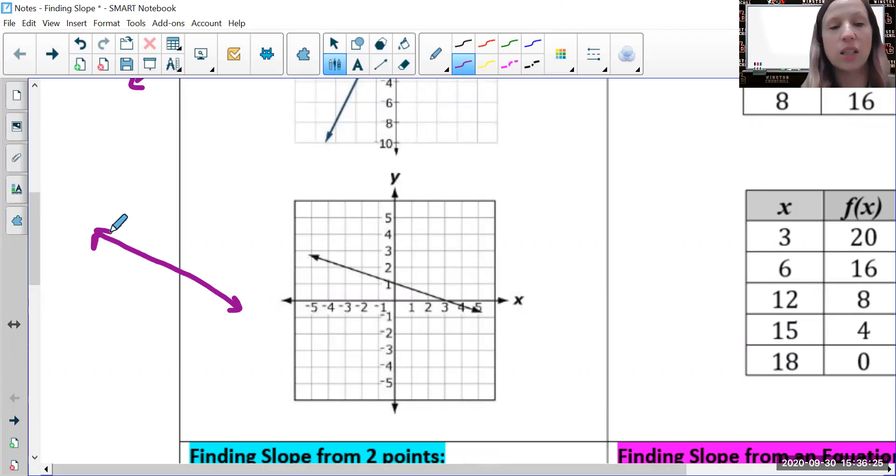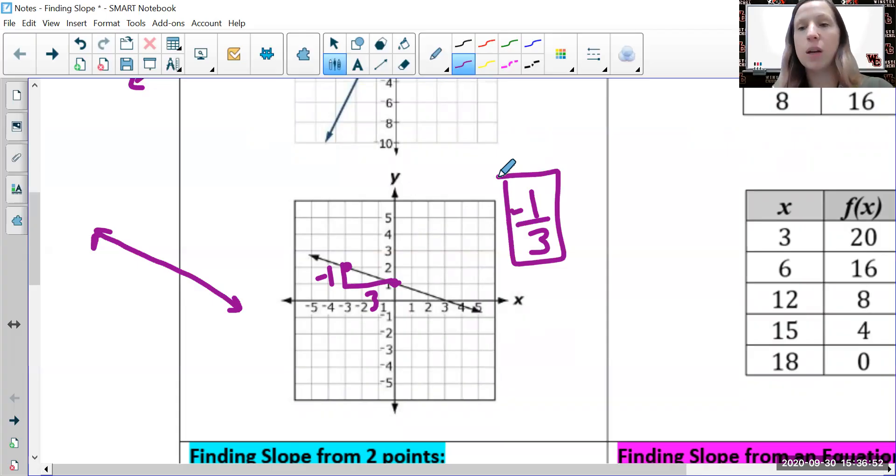Once again, find two points. Rise doesn't always mean go up - in this case I'm going down one, so it's a negative one, and I'm going over three. So rise over run: our slope is negative one-third. If you can divide them, divide them, but in this case three can't divide into one, so it remains a fraction: negative one-third.